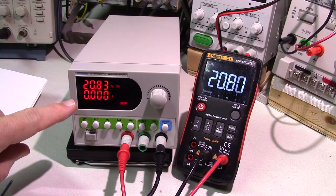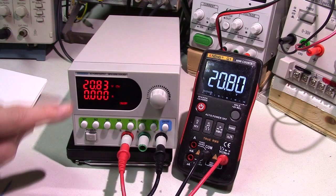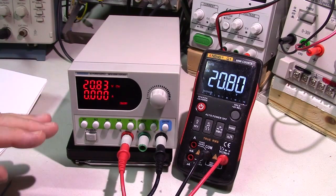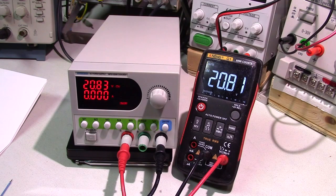You notice what happens—it goes to zero because there's nothing connected. There's no load. If you had a load, that would change and show you the current at that given voltage. You can see it's very accurate, spot-on voltage, because they calibrate it at the factory.